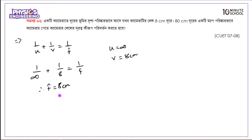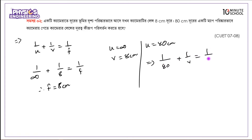Now the object is at 80 centimeters. So 1 over 80 plus 1 over v equals 1 over 8. Doing the calculation, we find v equals 8.89 centimeters.